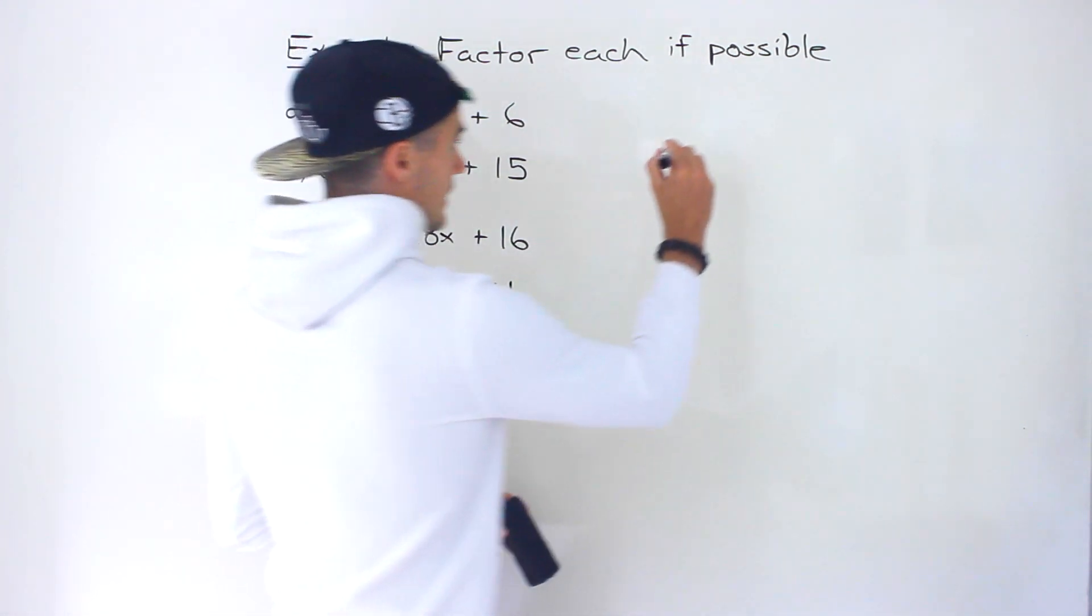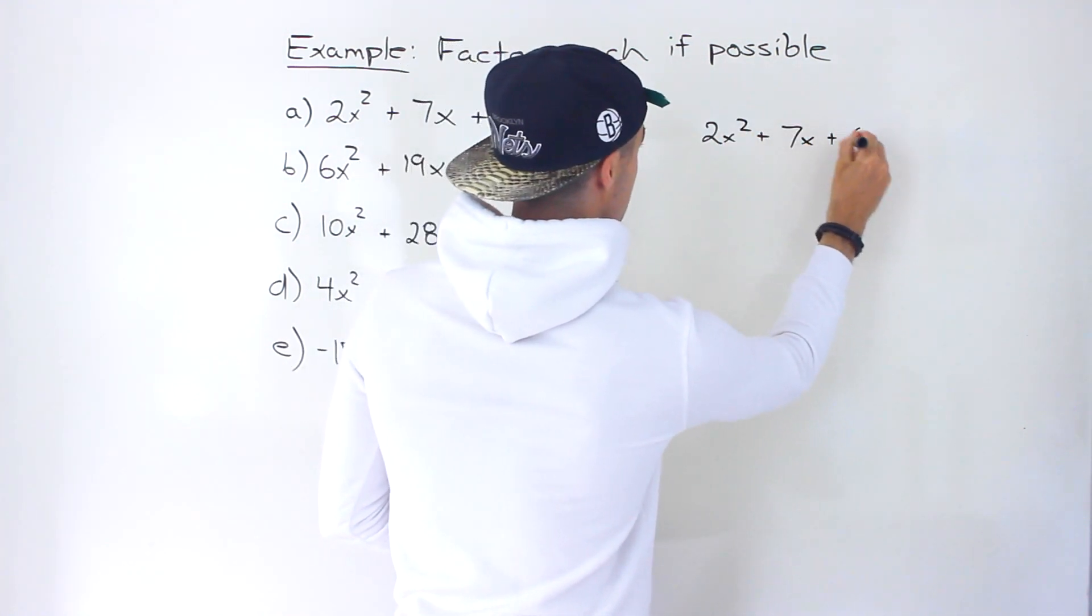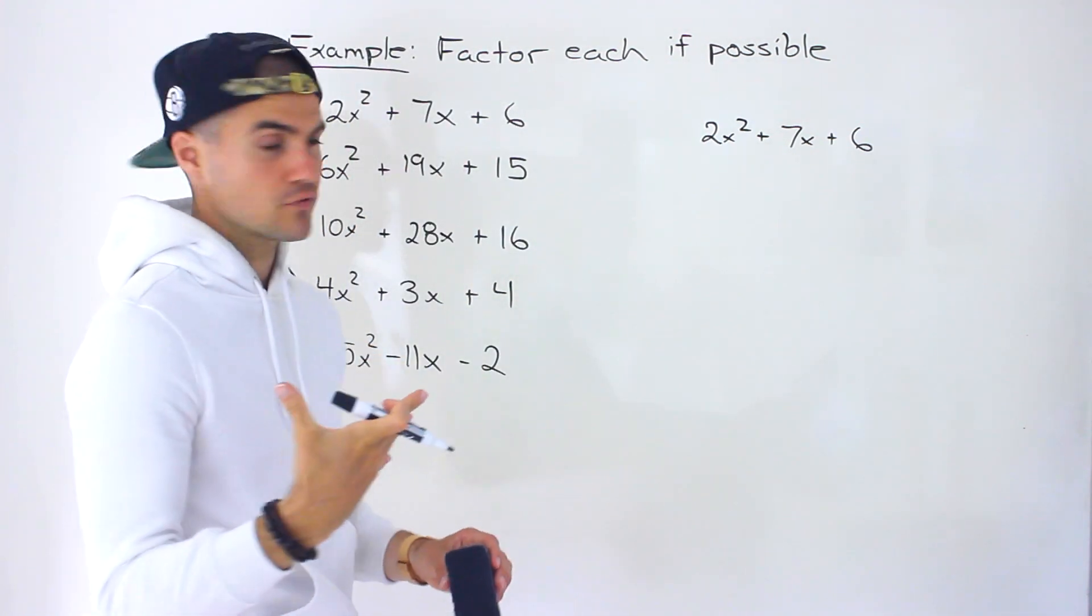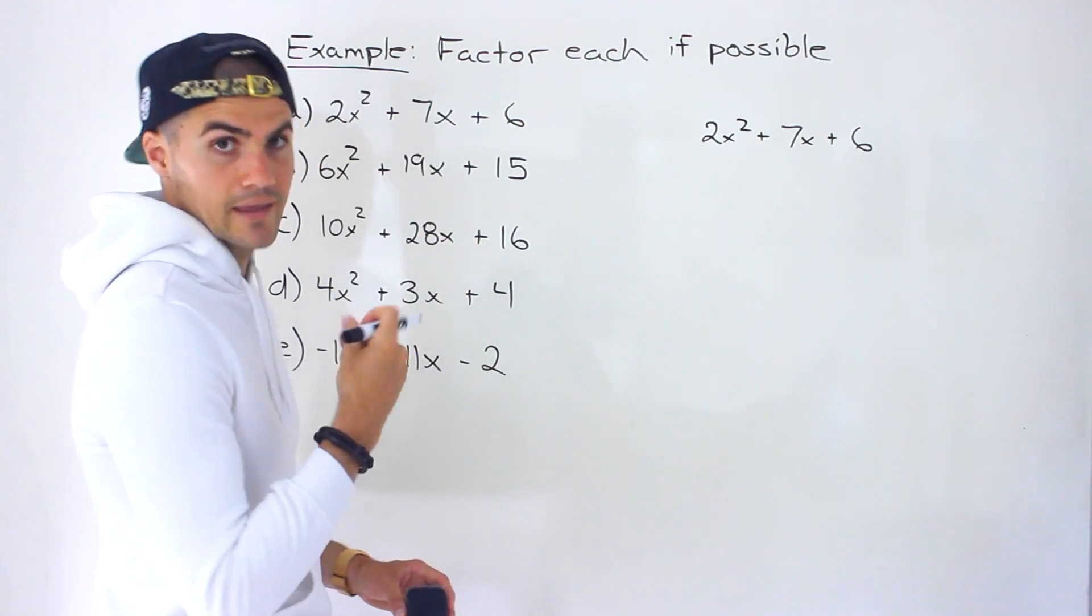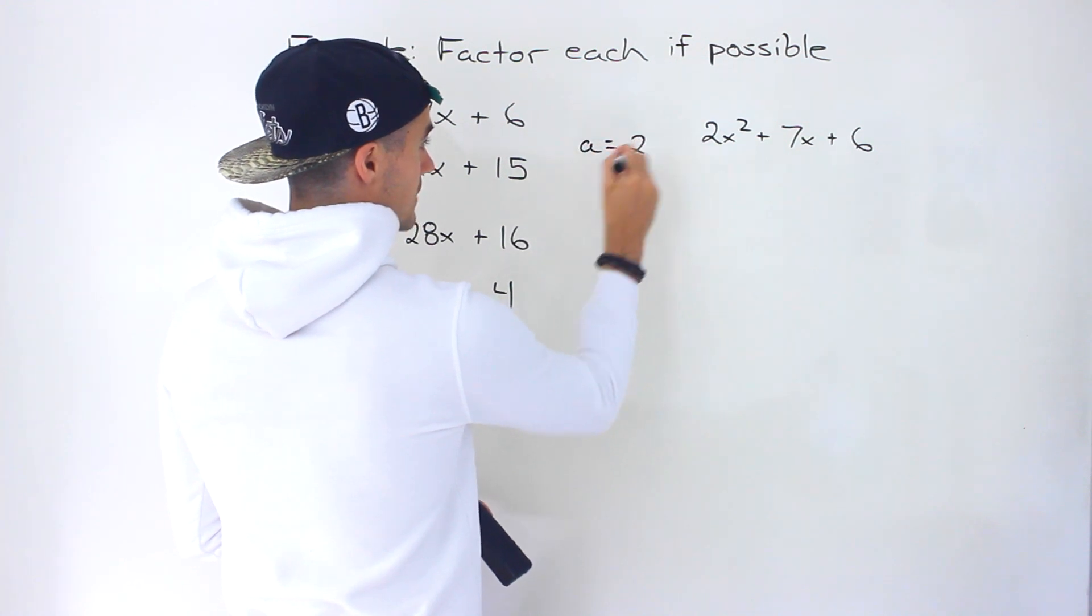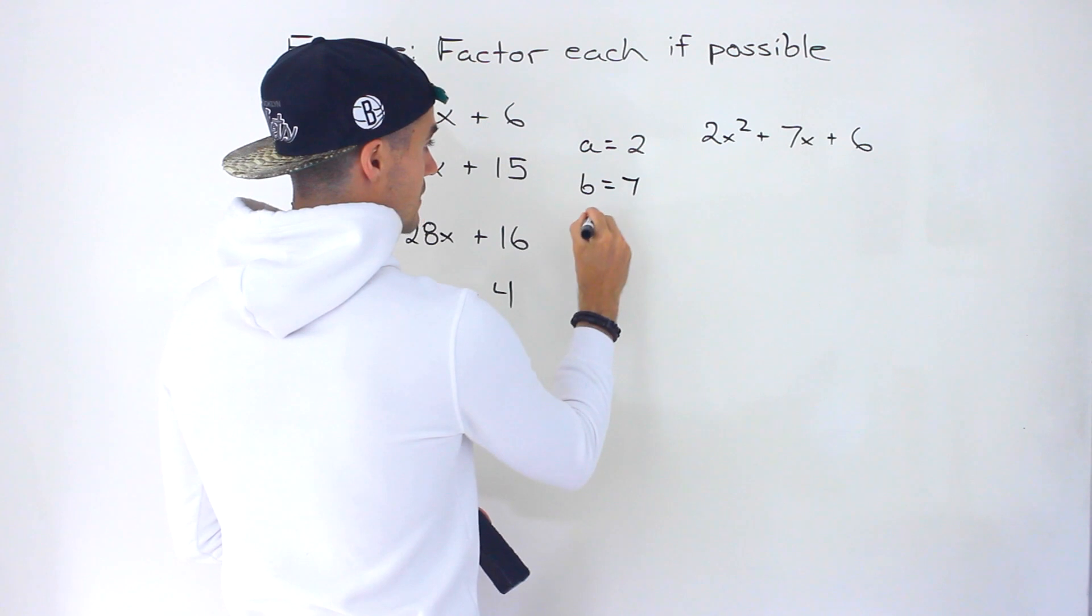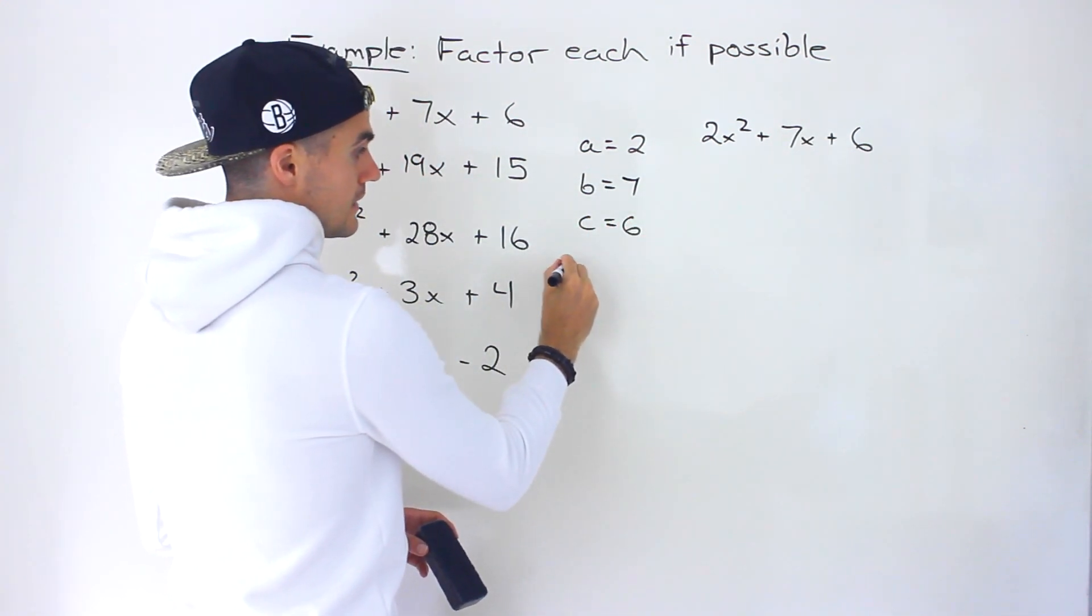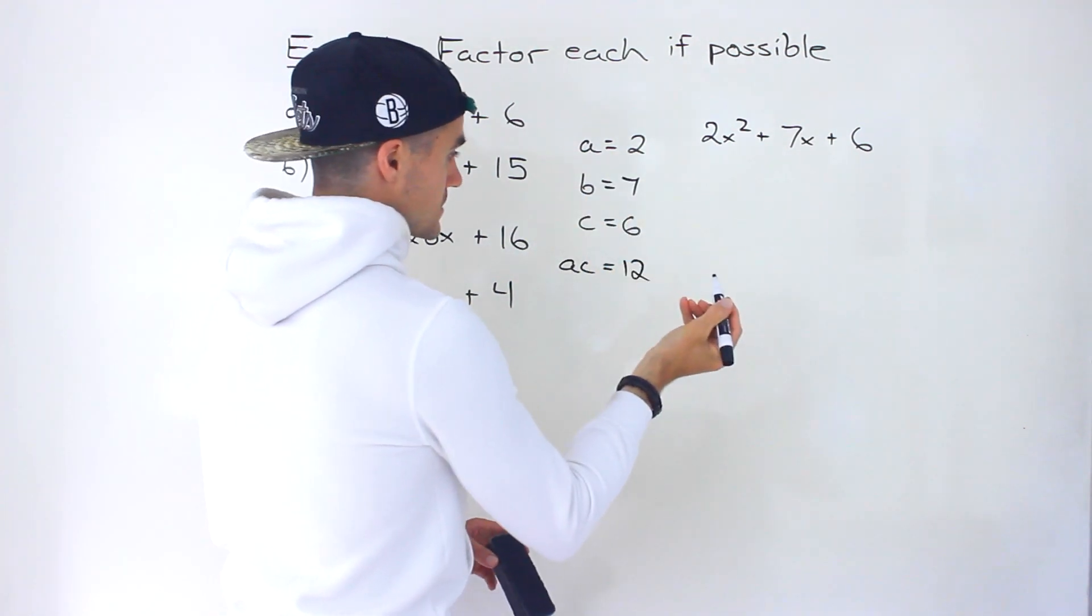Let's start off with part A. We got 2x² + 7x + 6. First thing we always check with factoring, can we take out a greatest common factor? Notice in this case we can't. So let's go right into the decomposition. Same steps as before. A value is 2, B value is 7, C value is 6. Then we get the AC value, which is 6 times 2, so it's going to be 12.